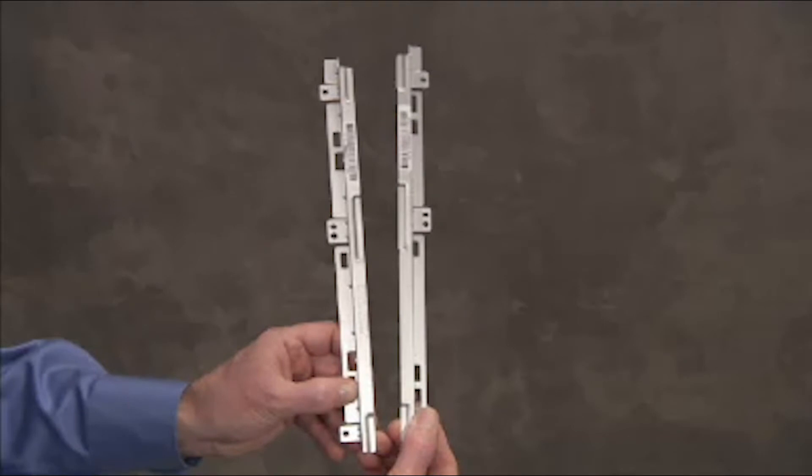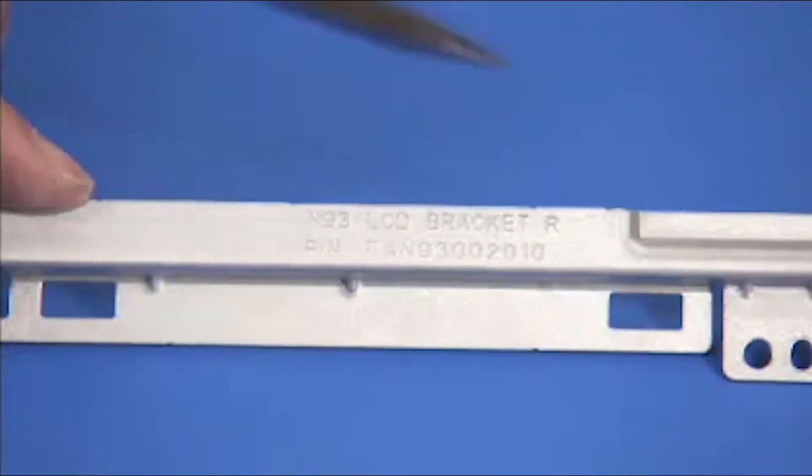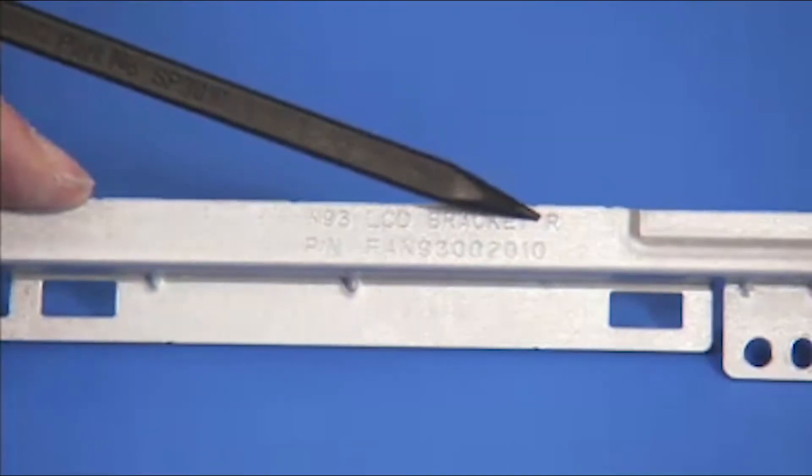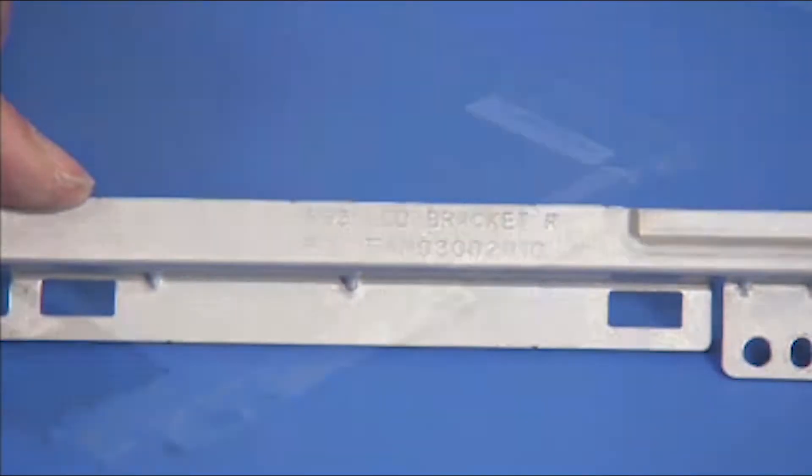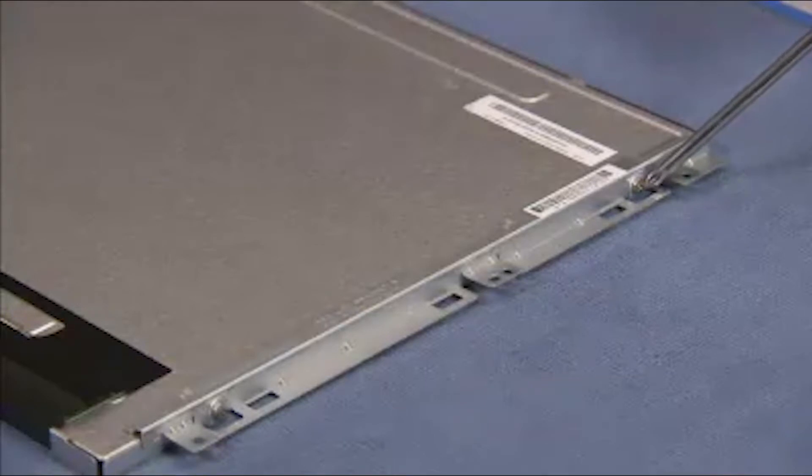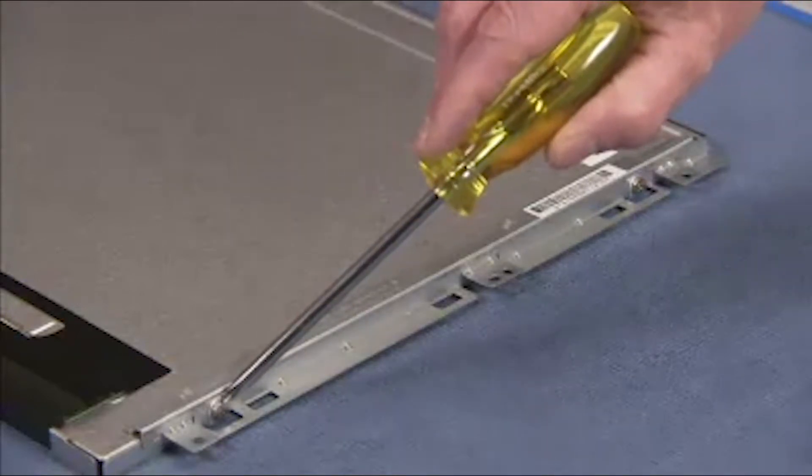To install a new LCD panel, first install the LCD brackets on the panel. The brackets are stenciled R and L to indicate their placement on the panel. Secure each bracket to the panel with its two Phillips number two screws.